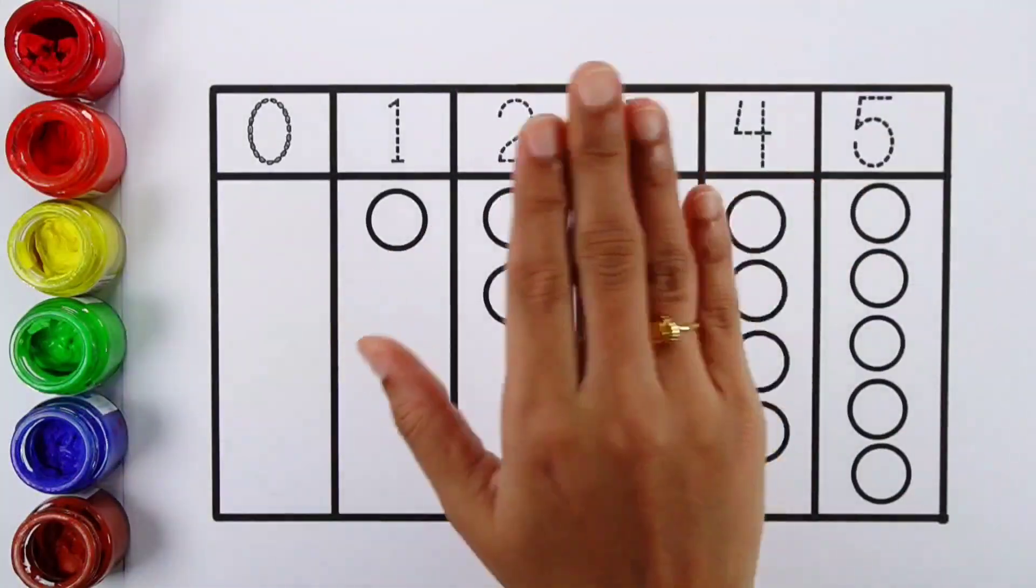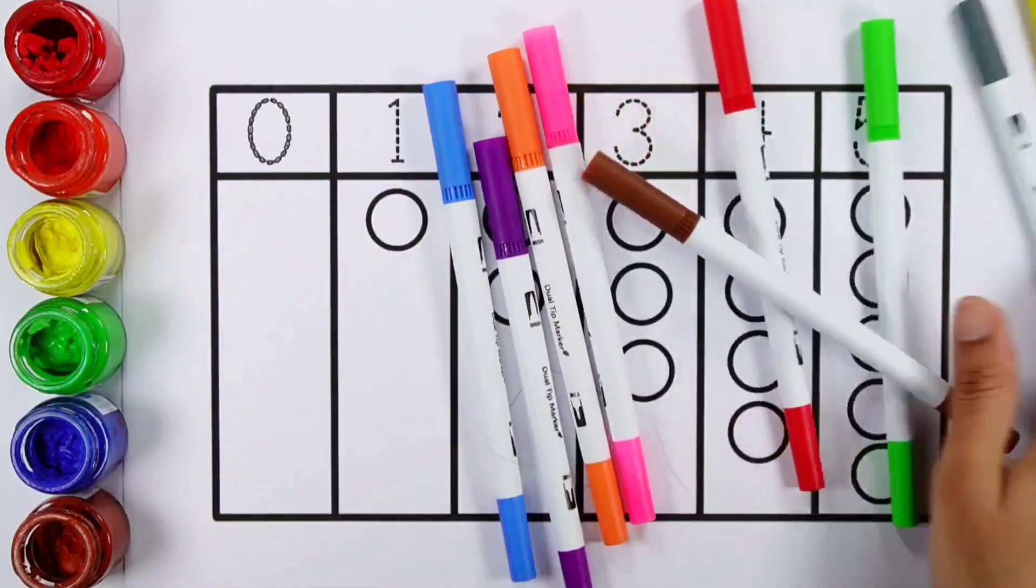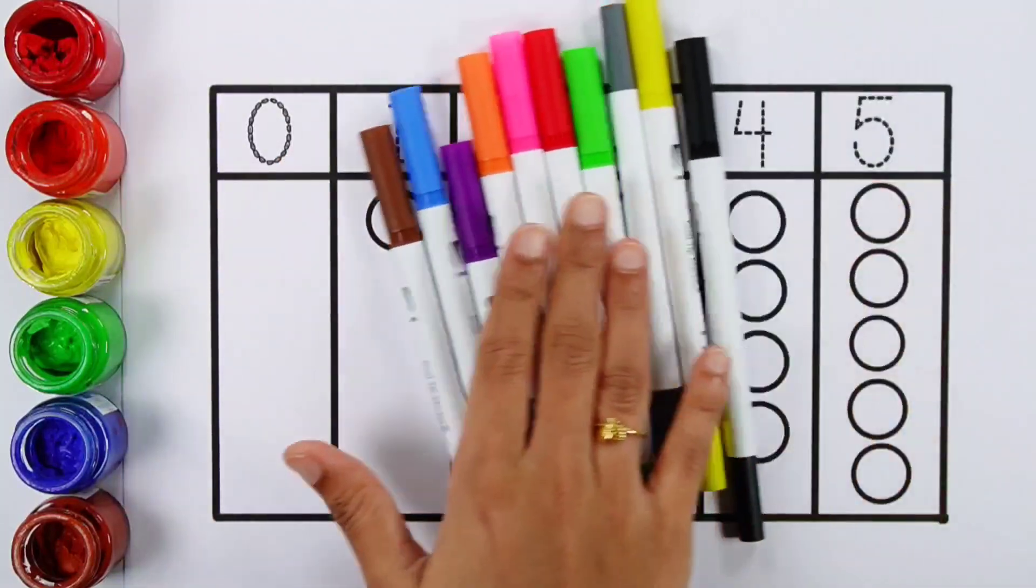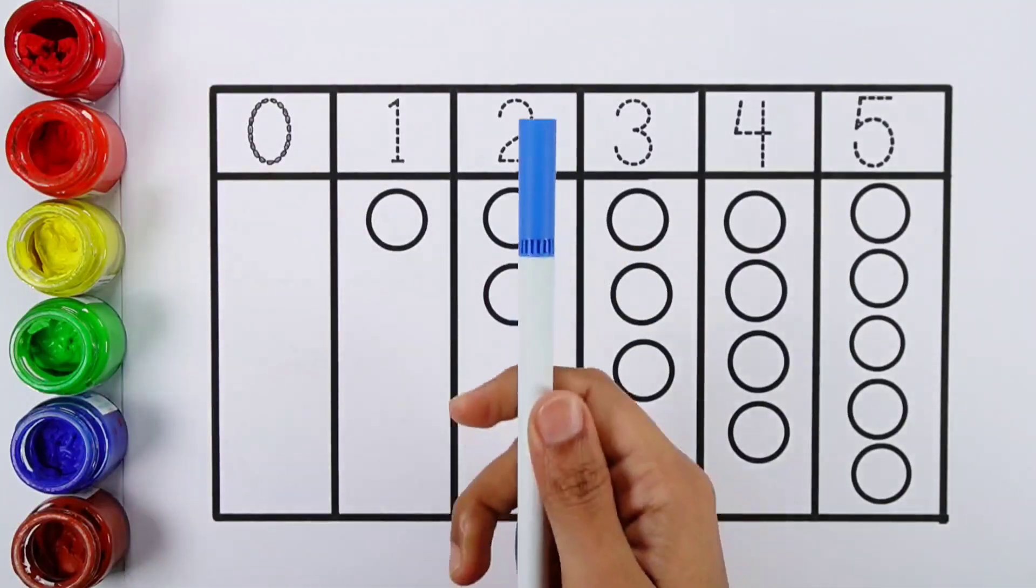Twenty. Twenty-one, twenty-two, twenty-three, twenty-four, twenty-five, twenty-six, twenty-seven.